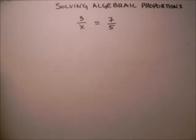What if we have a fraction with x in the denominator like this one? 3 over x equals 7 over 5. This is called an algebraic proportion.